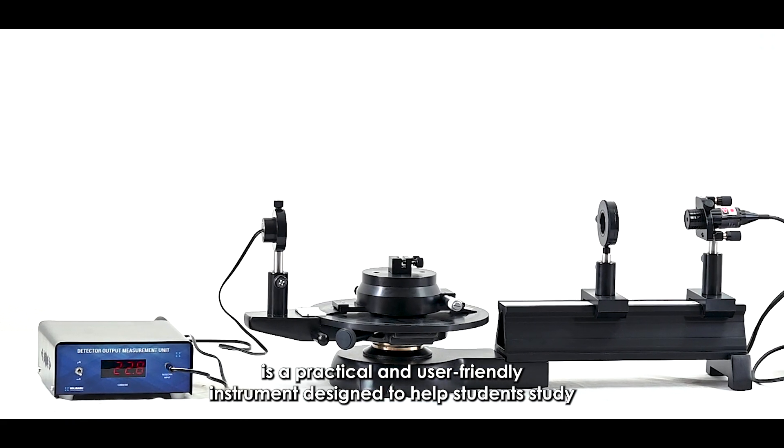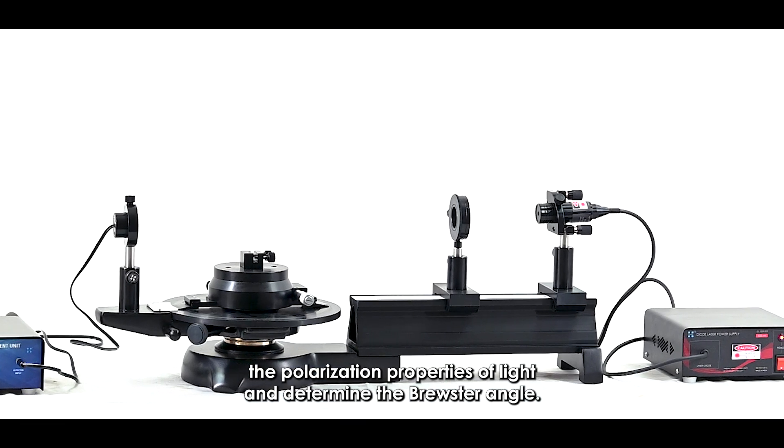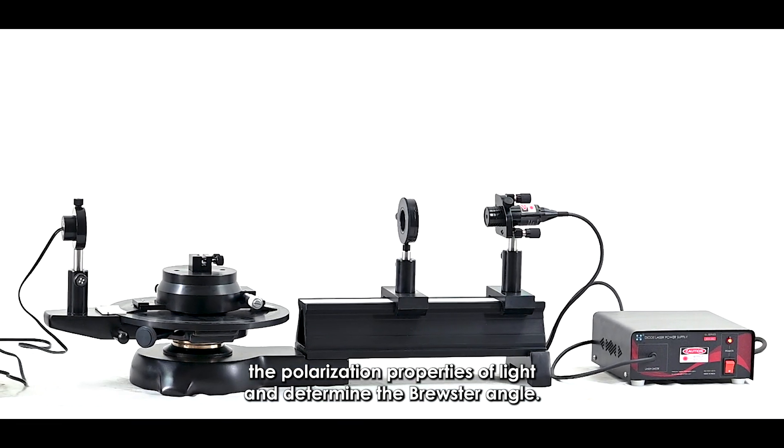Holmark's Brewster's Angle Apparatus, model HOEDOP-01, is a practical and user-friendly instrument designed to help students study the polarization properties of light and determine the Brewster Angle.